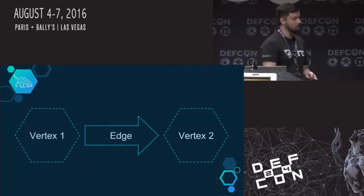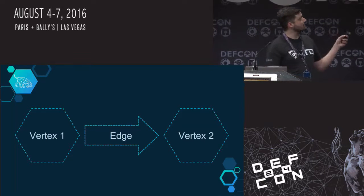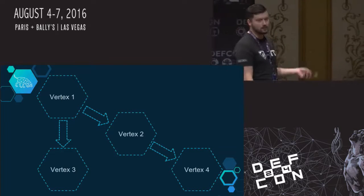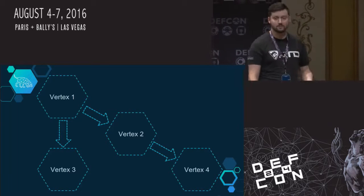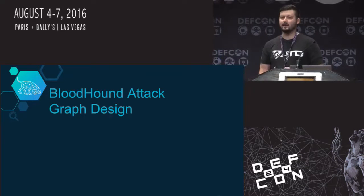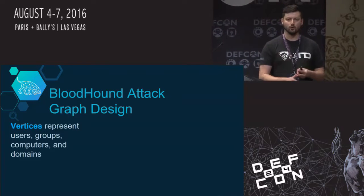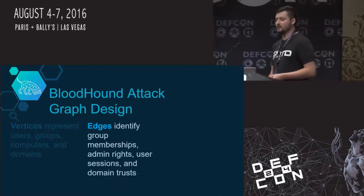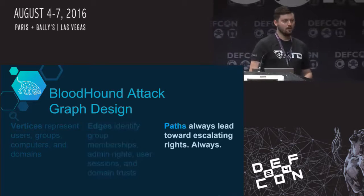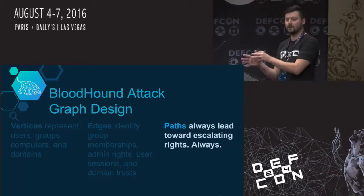Here's a visual way to look at the same thing. We have two vertices and a directed edge — you can go from vertex one to vertex two, but not the other way. Can you see a path from vertex one to vertex four? Yes. Is there a path from vertex three to vertex four? No, because you would have to go against a directed edge. After a lot of false starts, we finally landed on an attack graph design that works. The vertices represent users, groups, computers, and domains in Active Directory. Edges identify relationships — admin rights, group membership, user sessions, and domain trusts. Paths always lead towards escalating privileges.